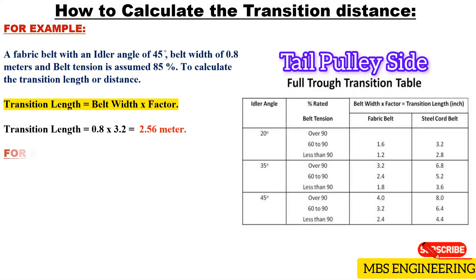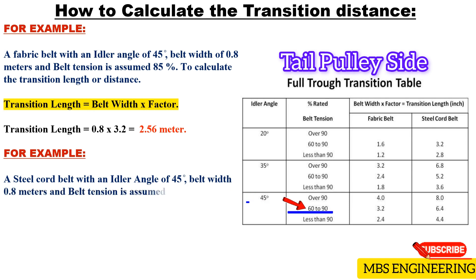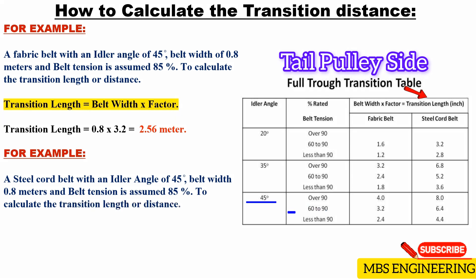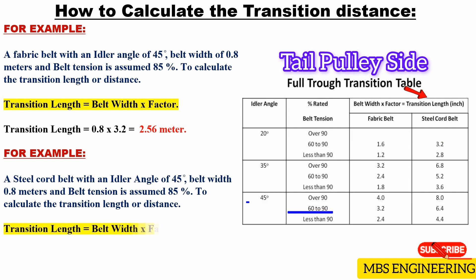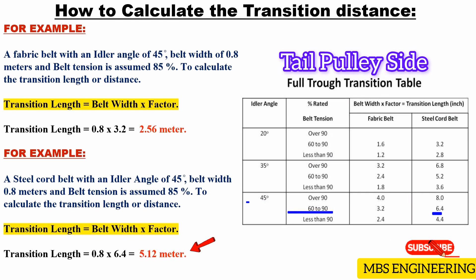Next sample example: A steel cord belt with an idler angle of 45 degrees, belt width of 0.8 meters, and belt tension assumed at 85%. Transition distance = belt width × factor = 0.8 × 6.4. Therefore, the obtained minimum recommended transition distance is 5.12 meters.